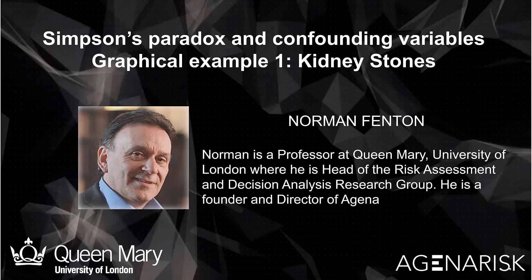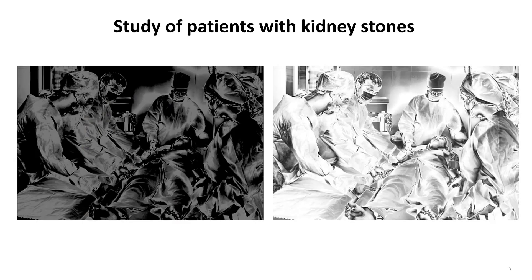Hi, my name is Norman Fenton, and this presentation is a very brief graphical example of a statistical paradox that has tricked many people and led to flawed decision-making. The example is a study of patients with kidney stones. Some patients got treatment A, and the rest got treatment B.